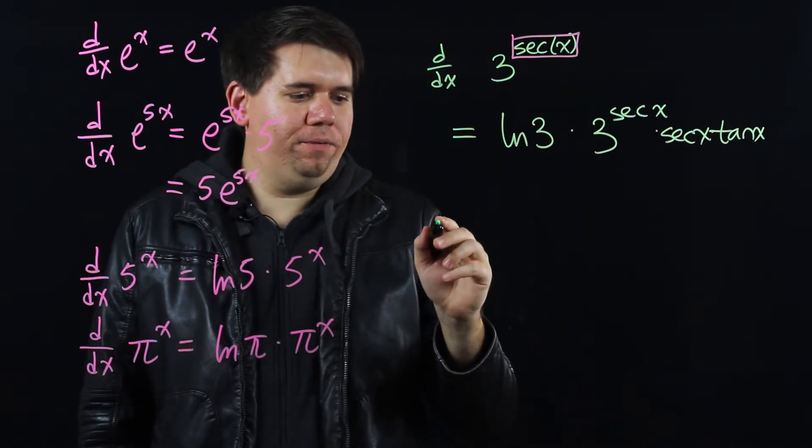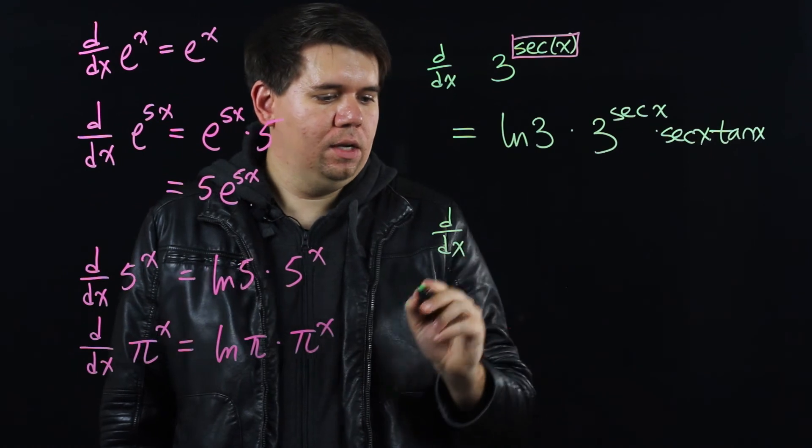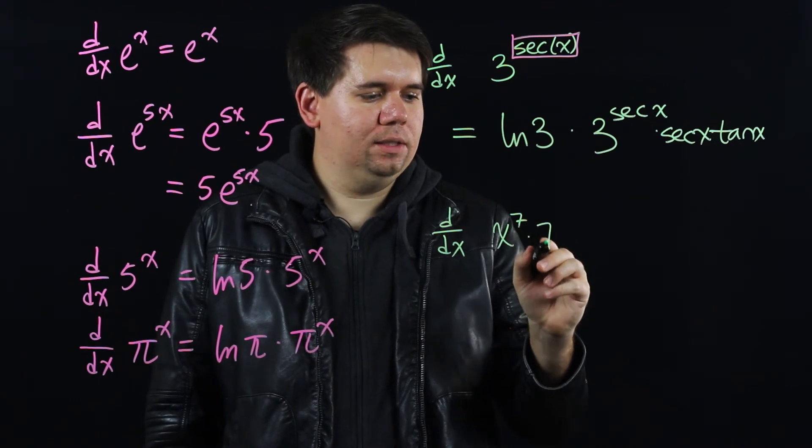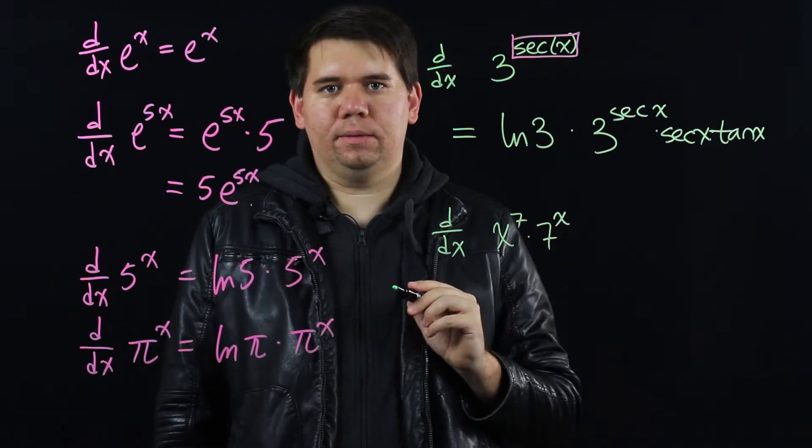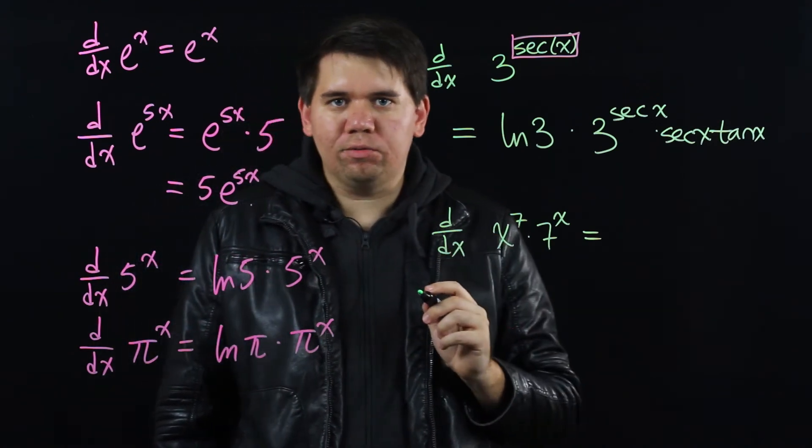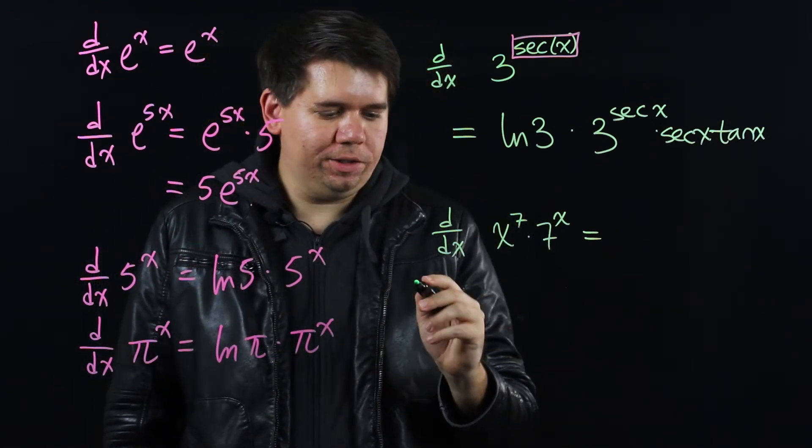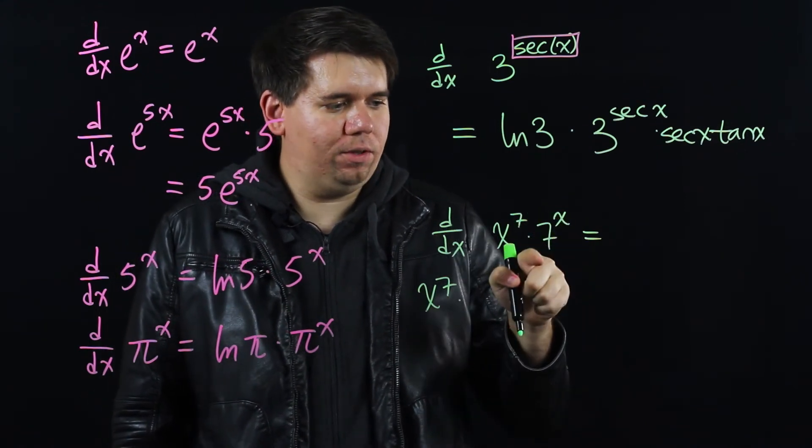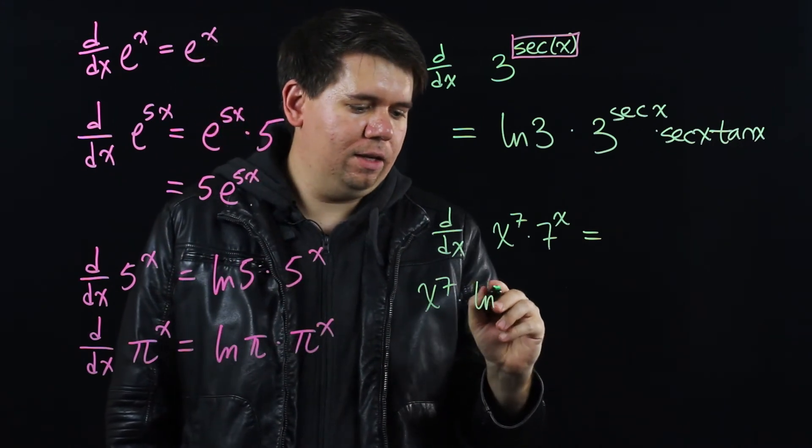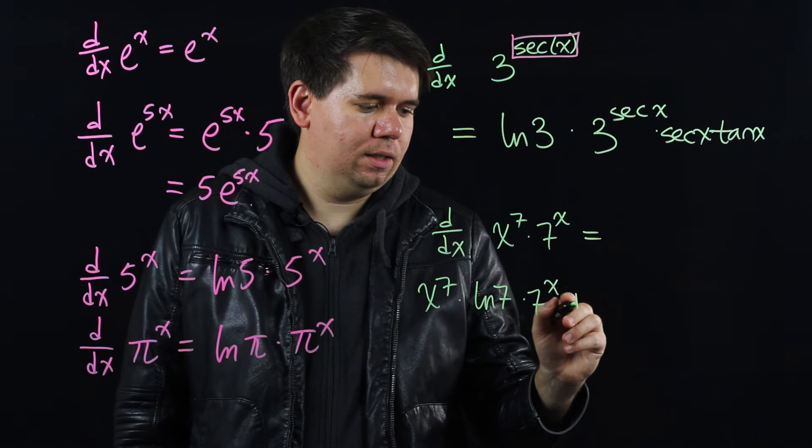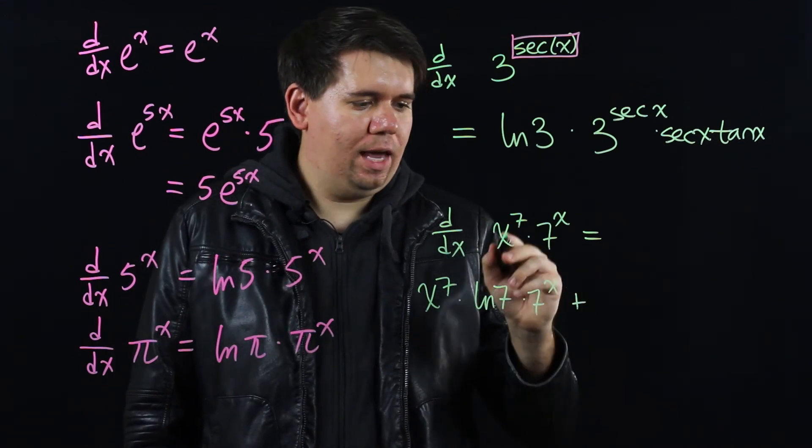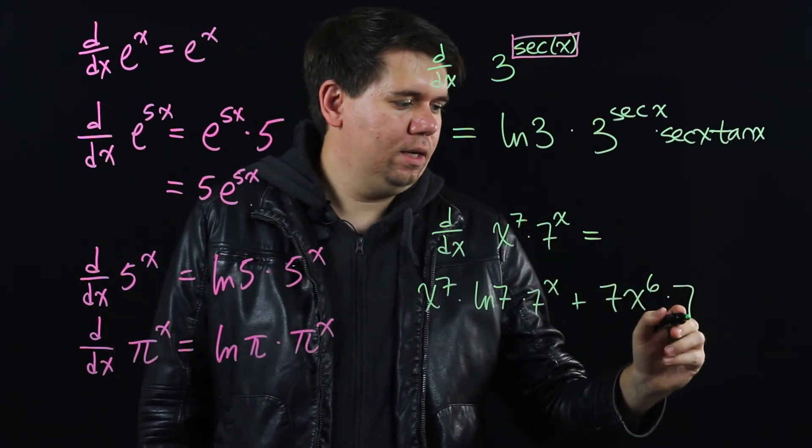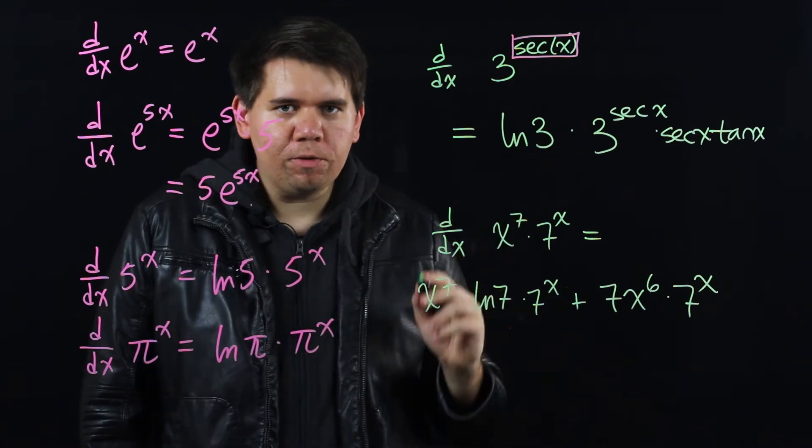Let's look at one more example. What if you have something like the derivative of say x to the 7th times 7 to the x? Well we're going to need to use the product rule. This is a product. So we say okay hold the first times the derivative of the second. The derivative of 7 to the x just like in these examples is ln of 7 times 7 to the x. Plus the derivative of the first x to the 7 is 7x to the 6 times leave the second the same 7 to the x.